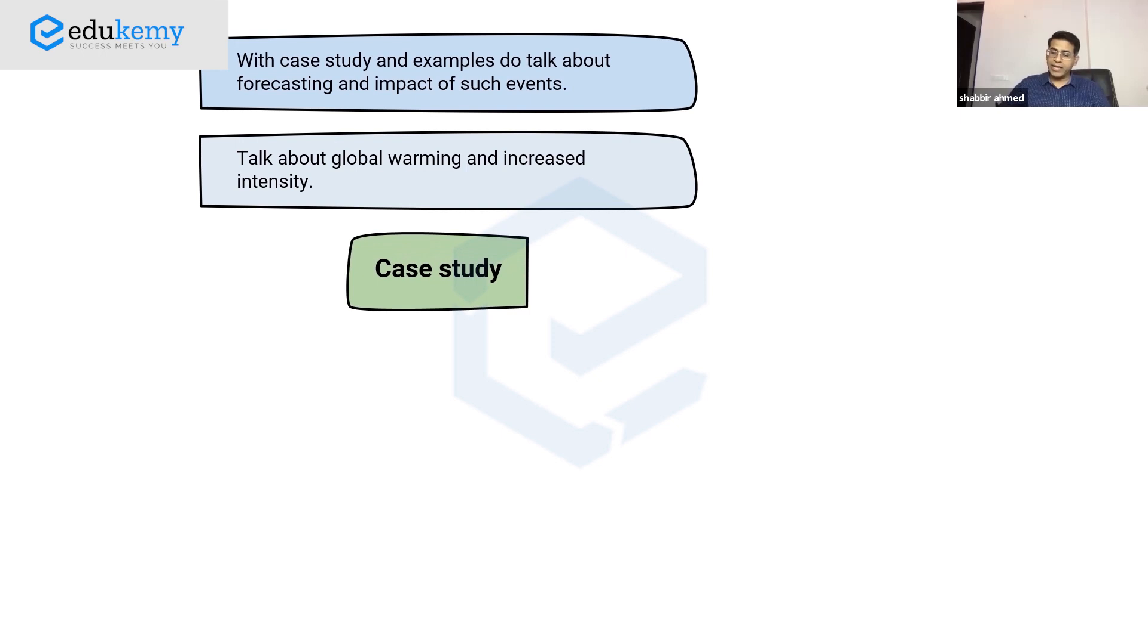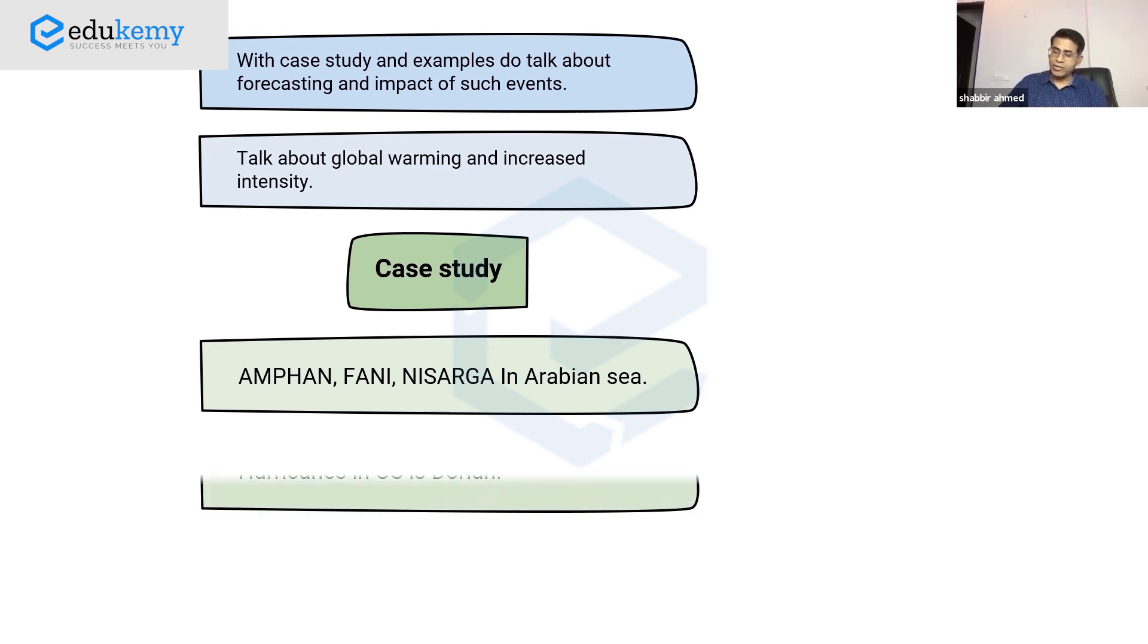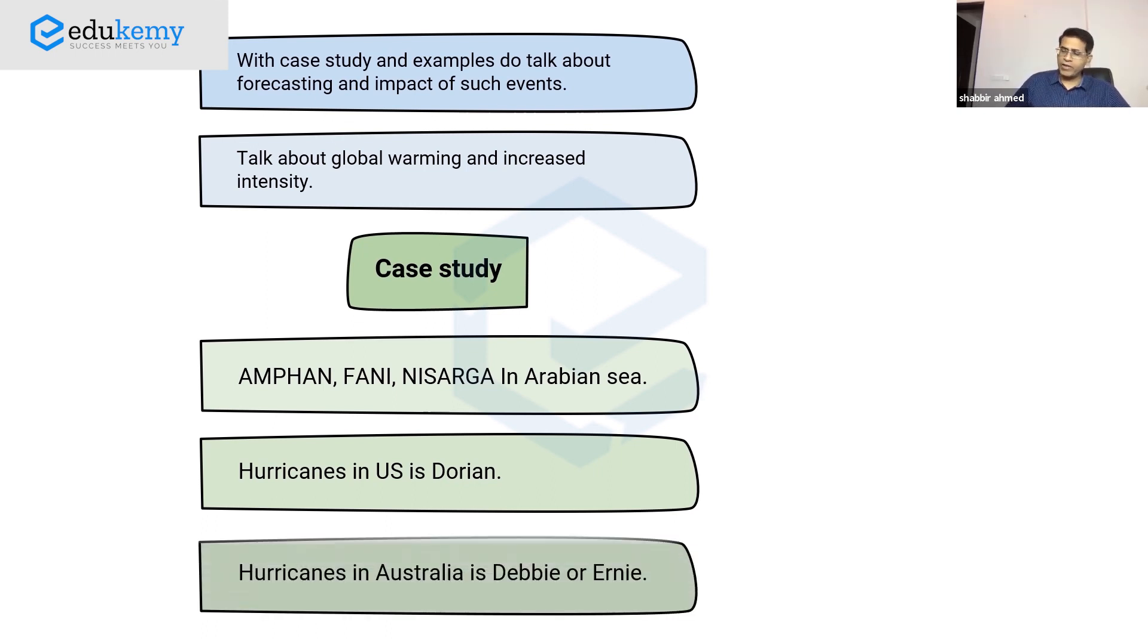This is an additional suggestion: have some case study. For India, you can talk about Fani which was very bad last year, or Nisarga, a very unusual cyclone in the Arabian Sea. For the US, talk about Hurricane Dorian, and for Australia, mention Willy-Willy. Use examples like this.